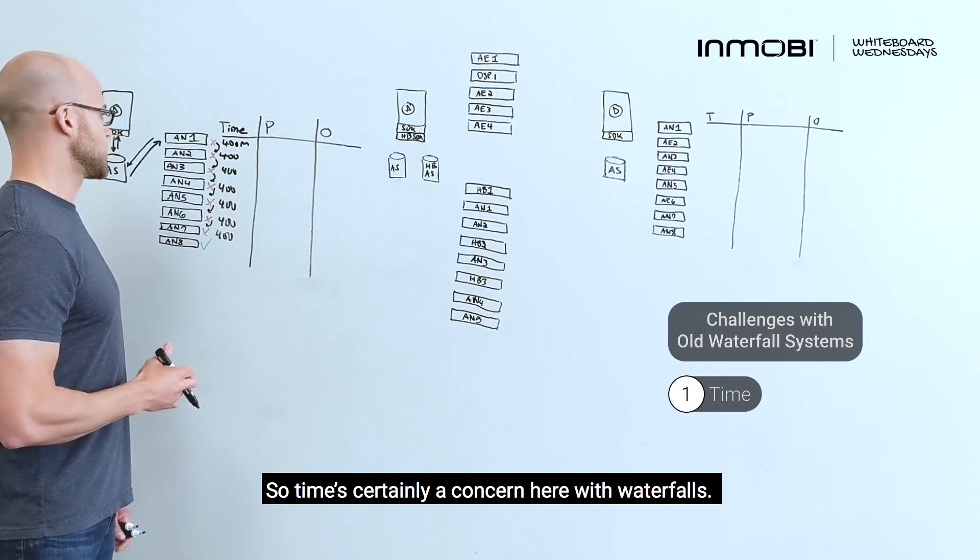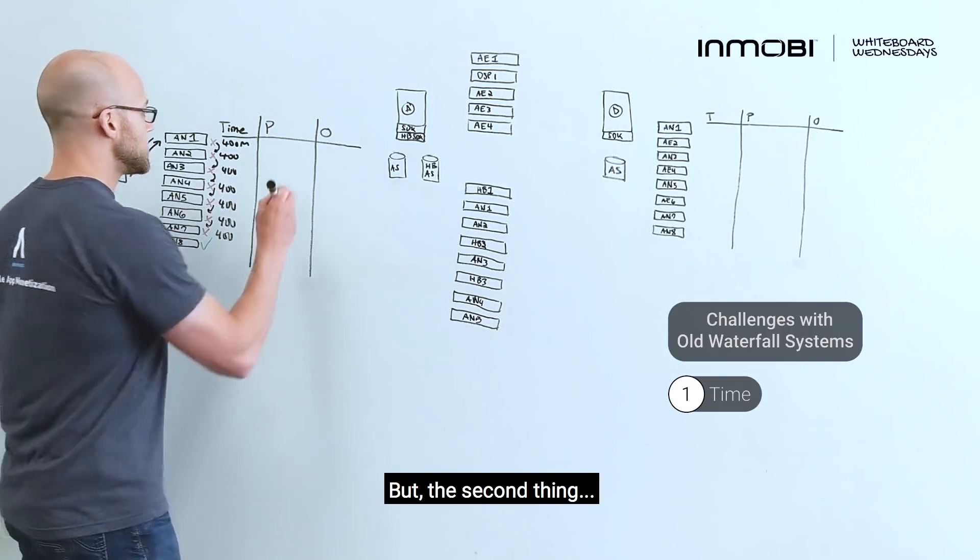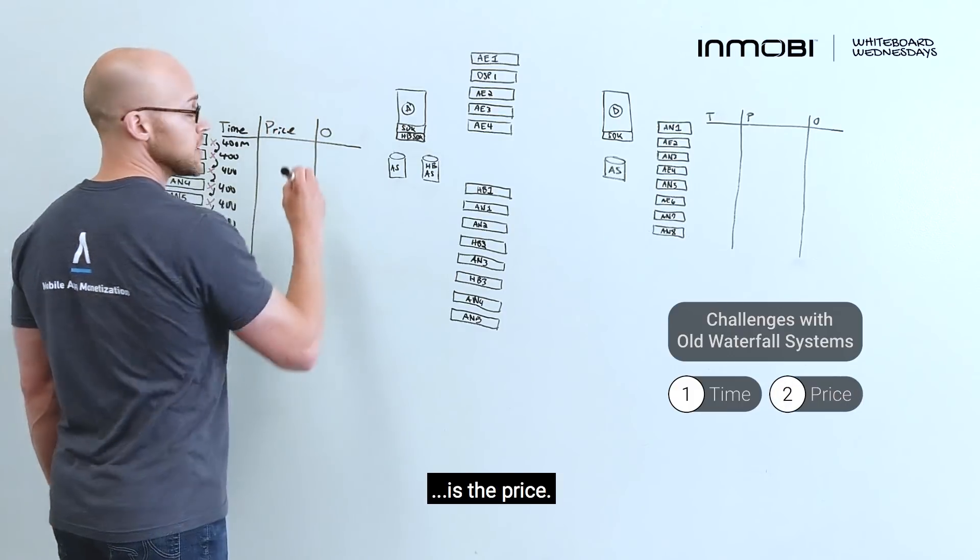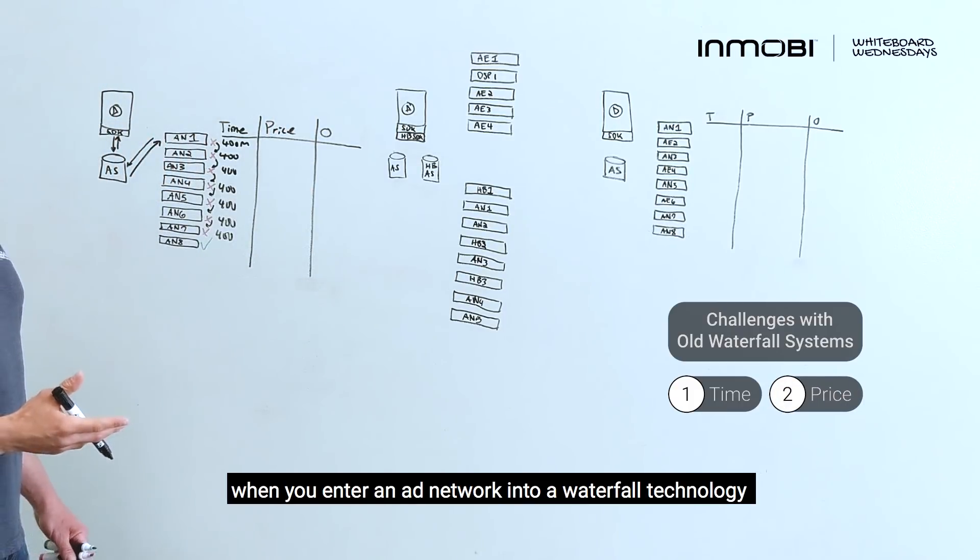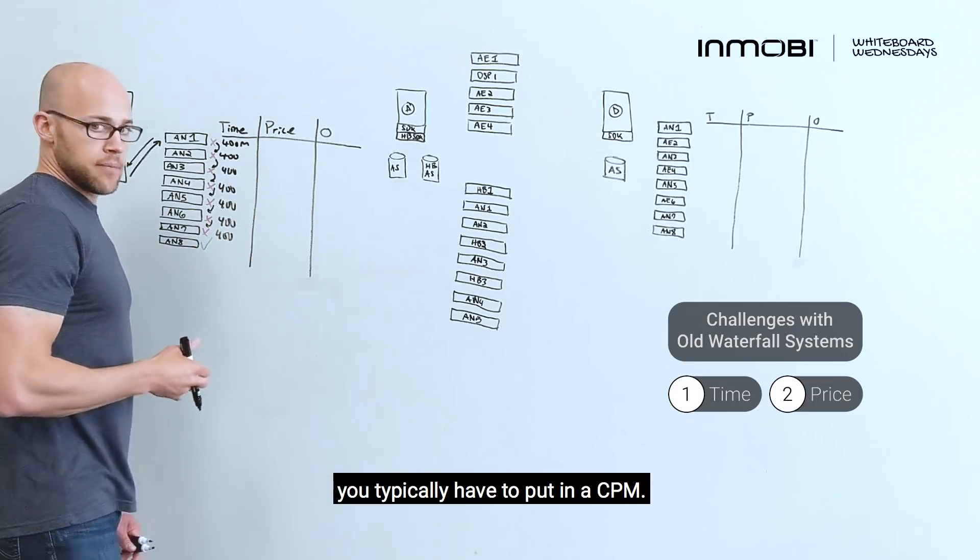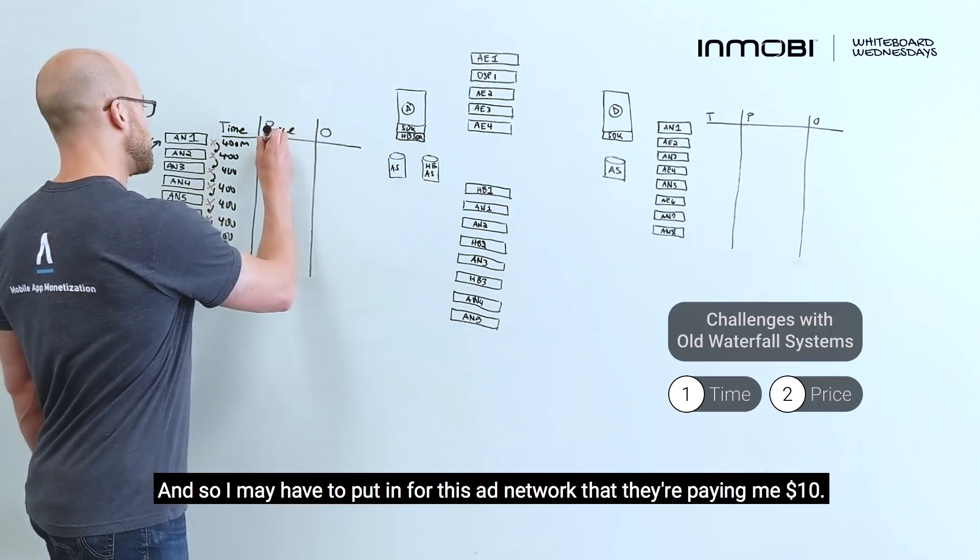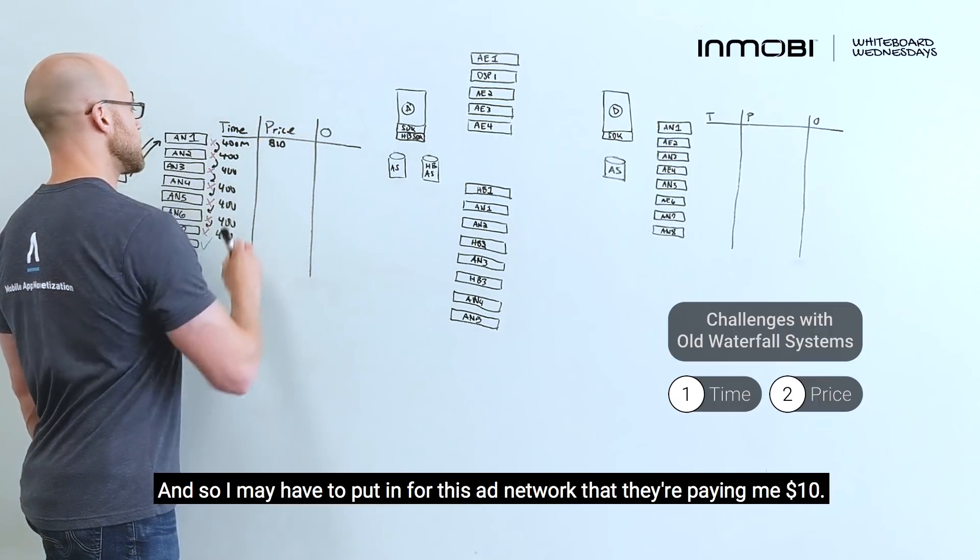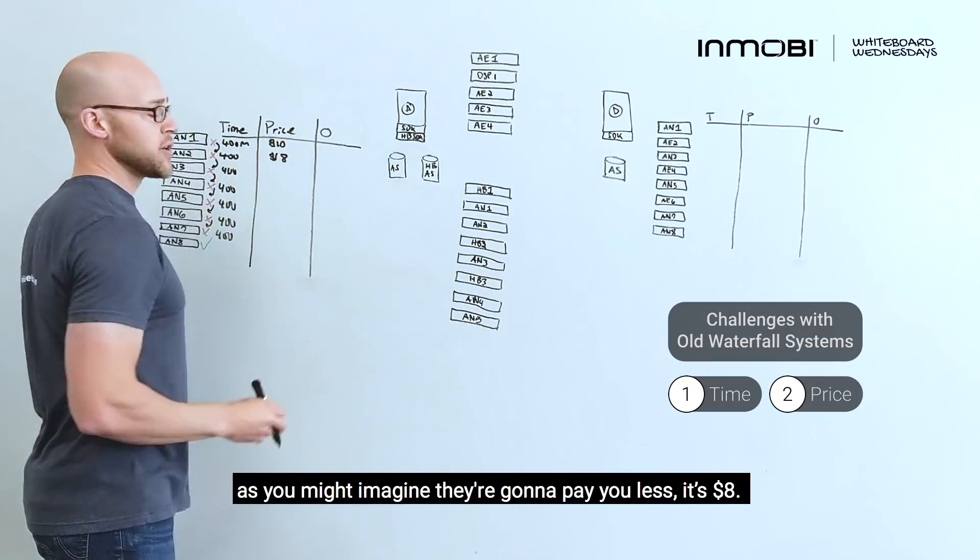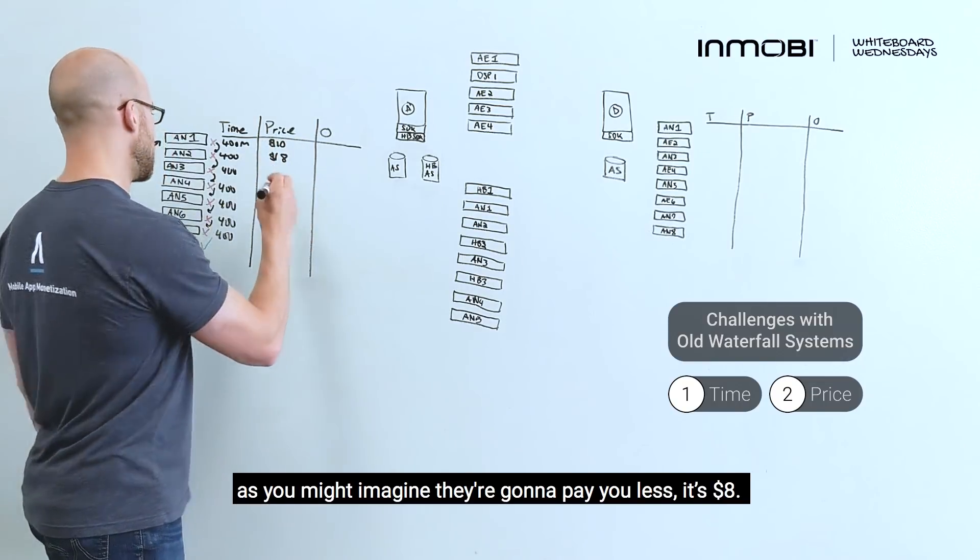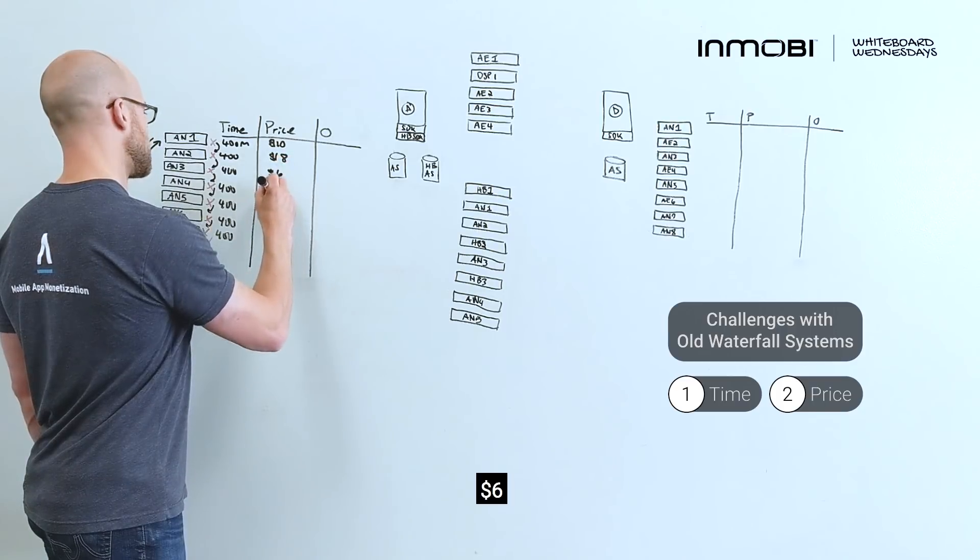So time is certainly a concern here with waterfalls. The second thing is price. So when you enter an ad network into a waterfall technology, you typically have to put in the CPM. And so I may have to put in for this ad network that they're paying me $10. For ad network number two, as you might imagine, they're going to pay me less. It's $8, $6, $5, $4.75.